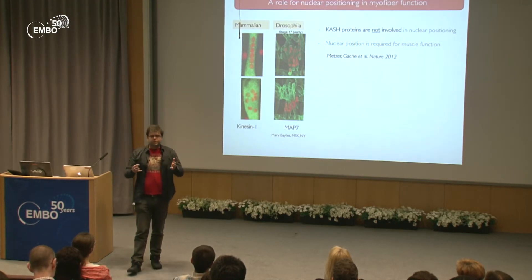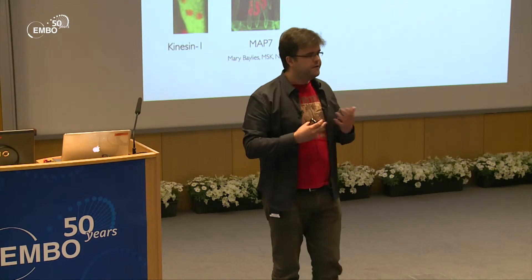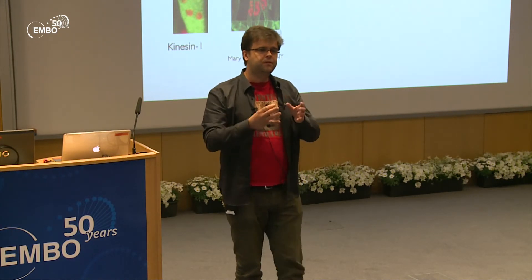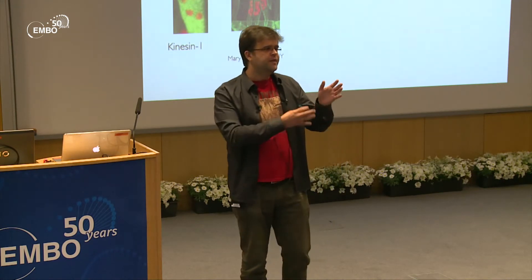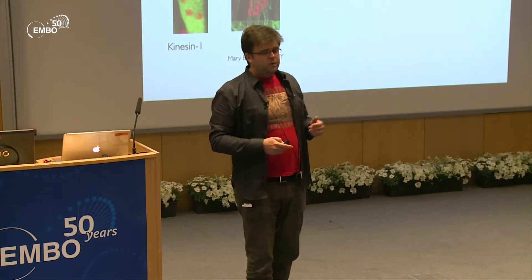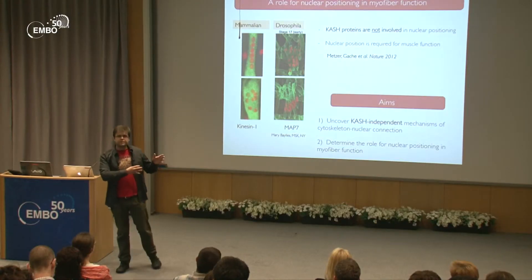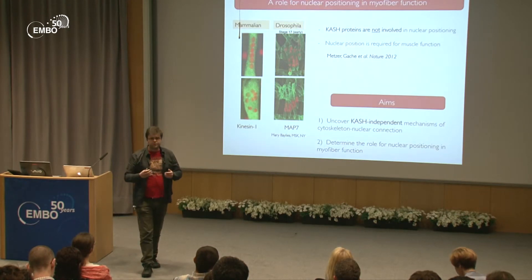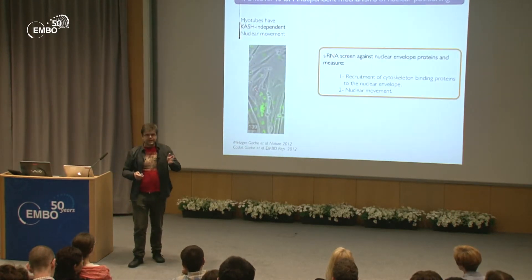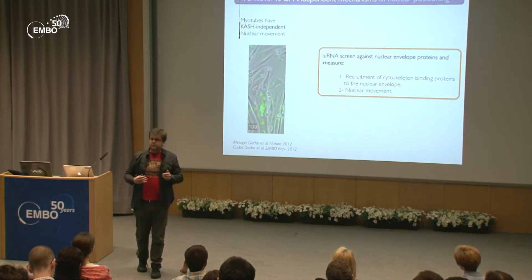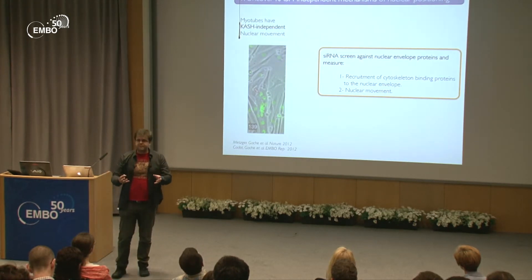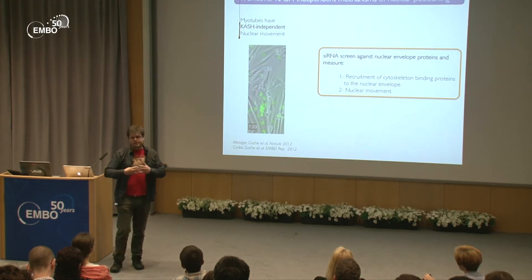So it's a completely novel area that we don't really know what is going on. Furthermore, for the first time, we showed that the position of the nucleus in the muscle is absolutely important for muscle function. If you disrupt nuclear positioning, the flies — in this case the larvae — have problems walking. Based on these two premises, part of the work I want to do is to use this system to discover new KASH-independent mechanisms of nuclear positioning, and also to determine the function of nuclear position in muscle fiber. We are going to perform an siRNA screen for nuclear envelope proteins, and then for what comes out, we'll try to identify the mechanisms of how the nucleus is connected to the cytoskeleton.